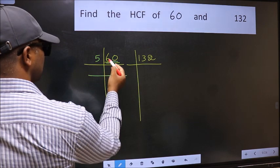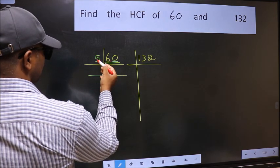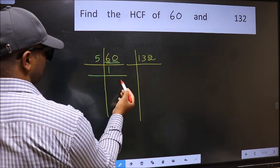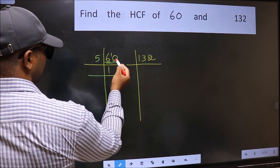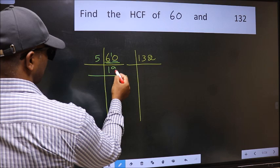First number 6. A number close to 6 in 5 table is 5 once 5. 6 minus 5 is 1, 1 carried forward 10. When do we get 10 in 5 table? 5, 2 is 10.